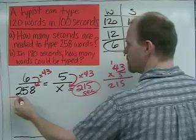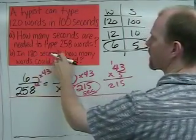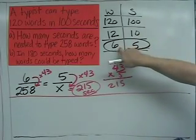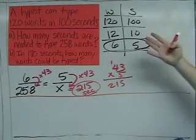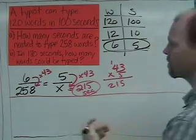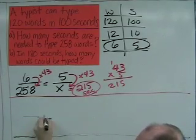Now to do the next question, in 180 seconds how many words could be typed? We're going to use this same ratio, 6 to 5, because it's the simplest. I could use either of these other ones, but I'm going to use 6 to 5. Now just to be a little bit different, to kind of change things up.